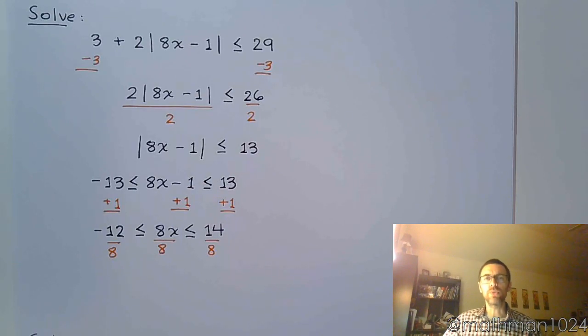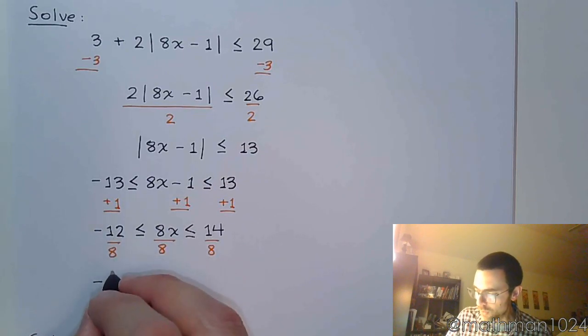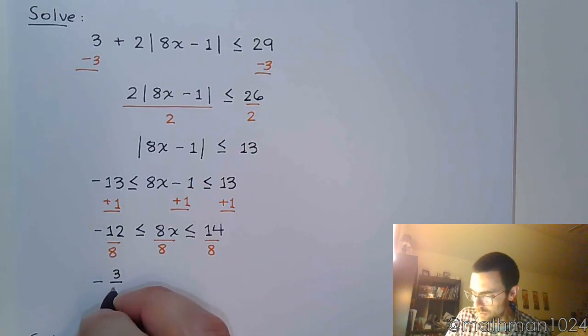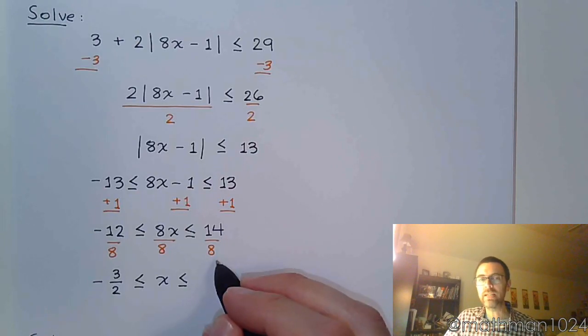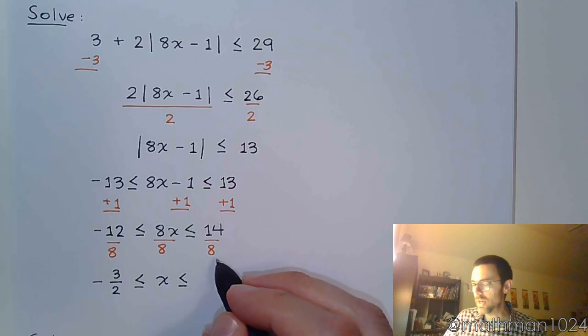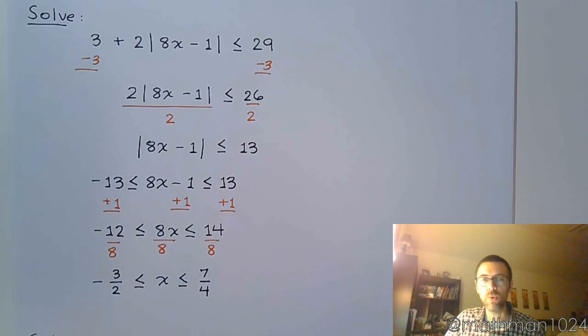And you want to make sure that you reduce. So here, these reduce by a common factor of 4, so we have negative 3 over 2 is less than or equal to x, which is less than or equal to 14 over 8. These have a common factor of 2, so we're left with 7 over 4.